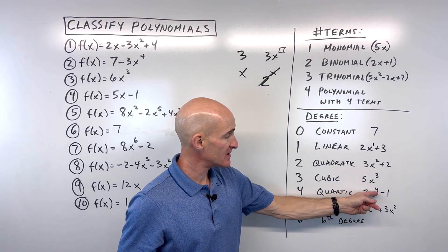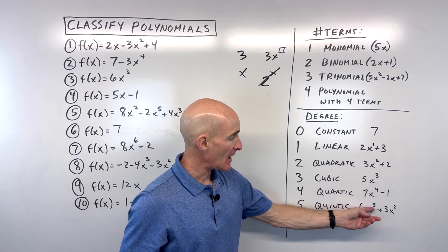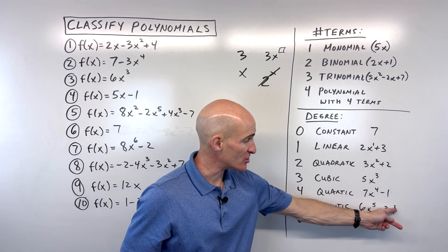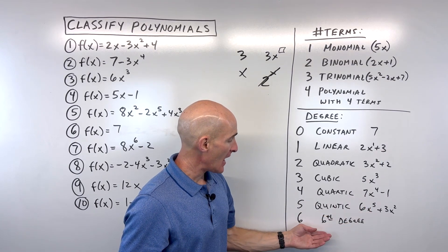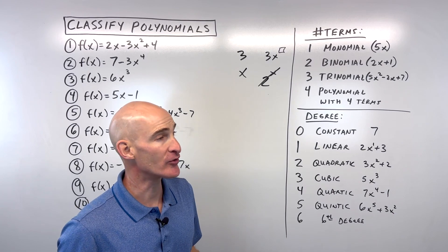Fourth degree, quartic. See, that highest power is 4. Fifth degree, we call it quintic. Highest exponent here is 5. See, this one's 2, but you go with the highest one. And then after that, you could just say 6th degree, 7th degree, 8th degree, etc., nth degree.